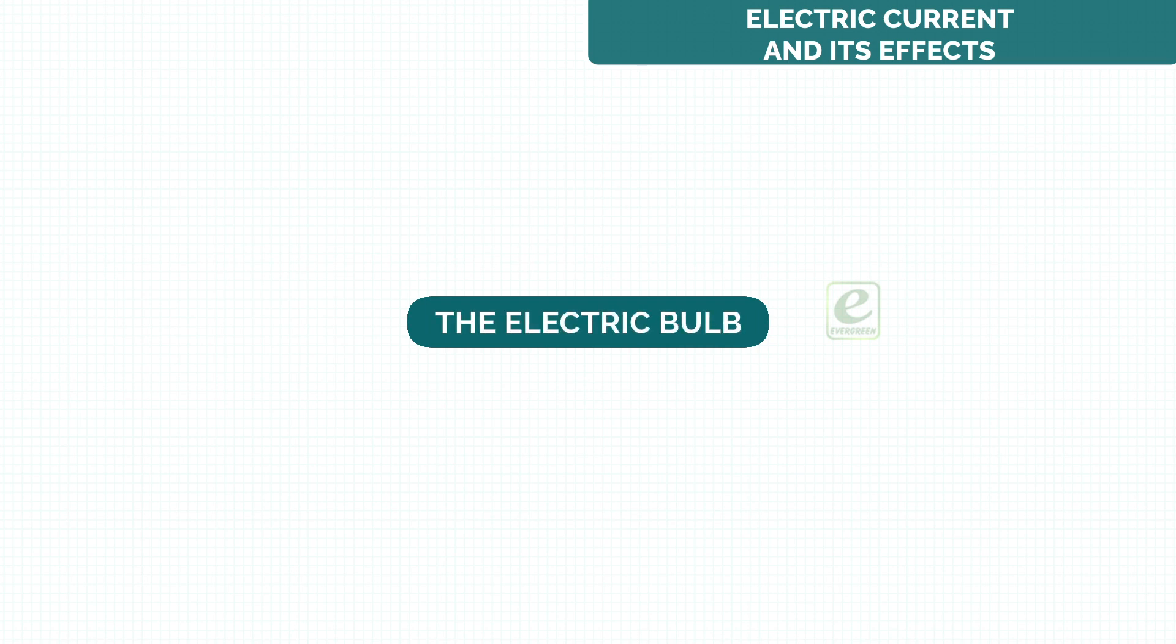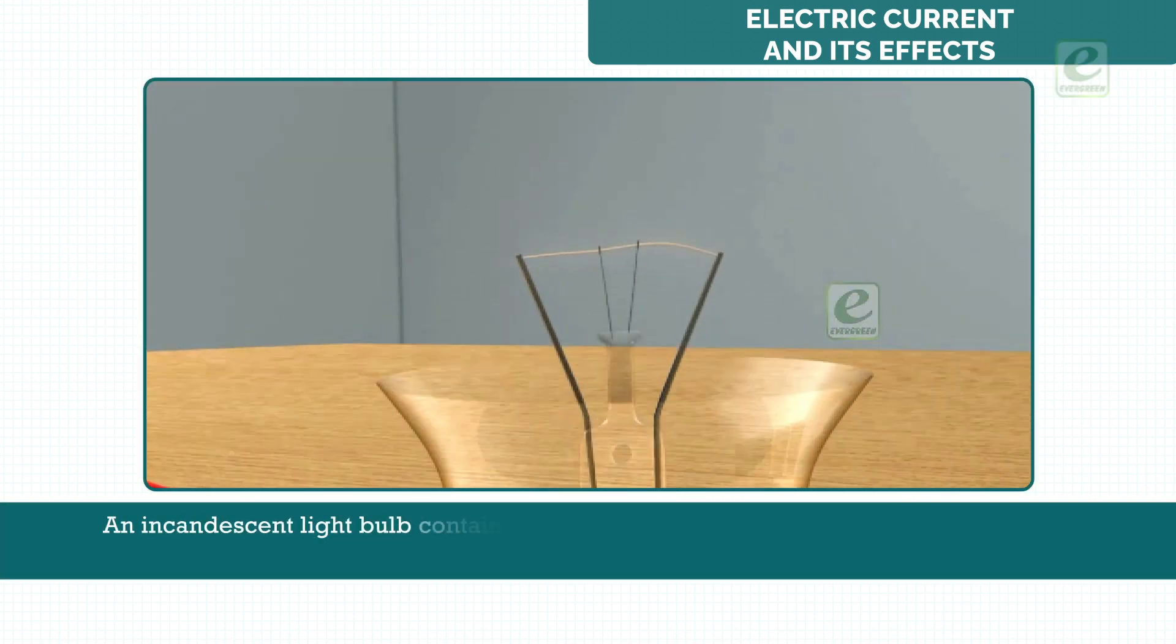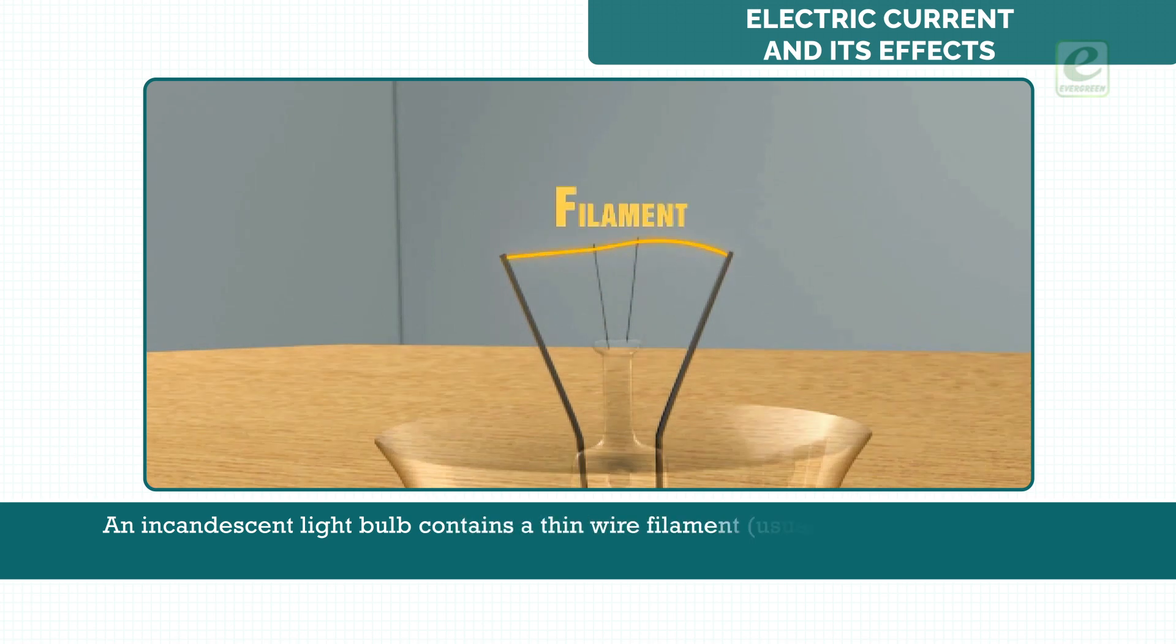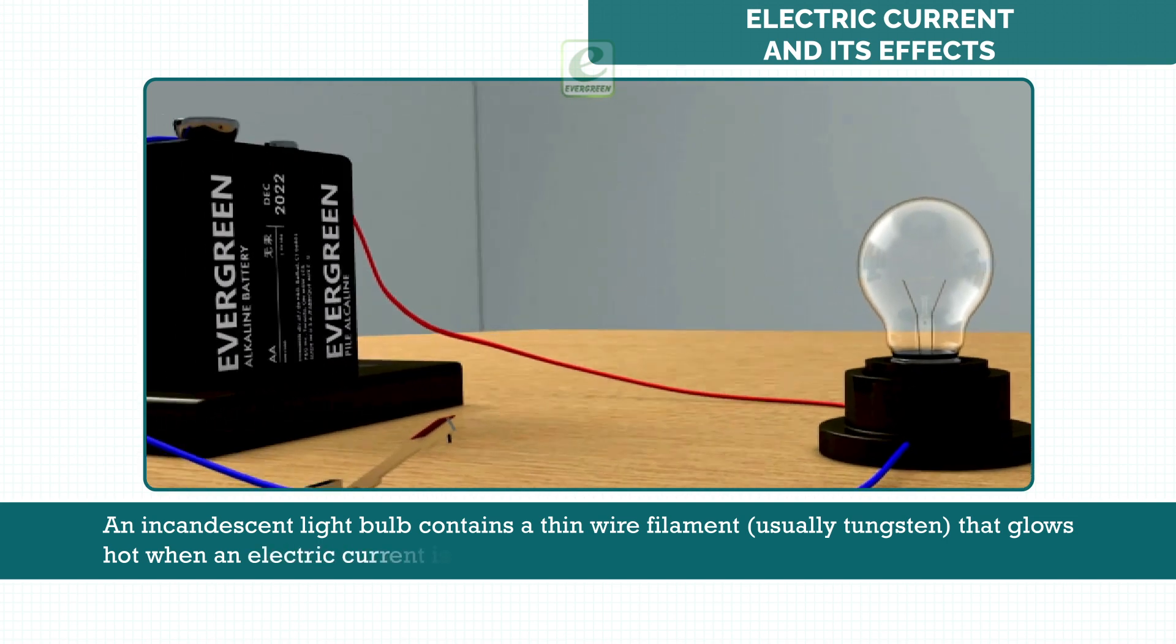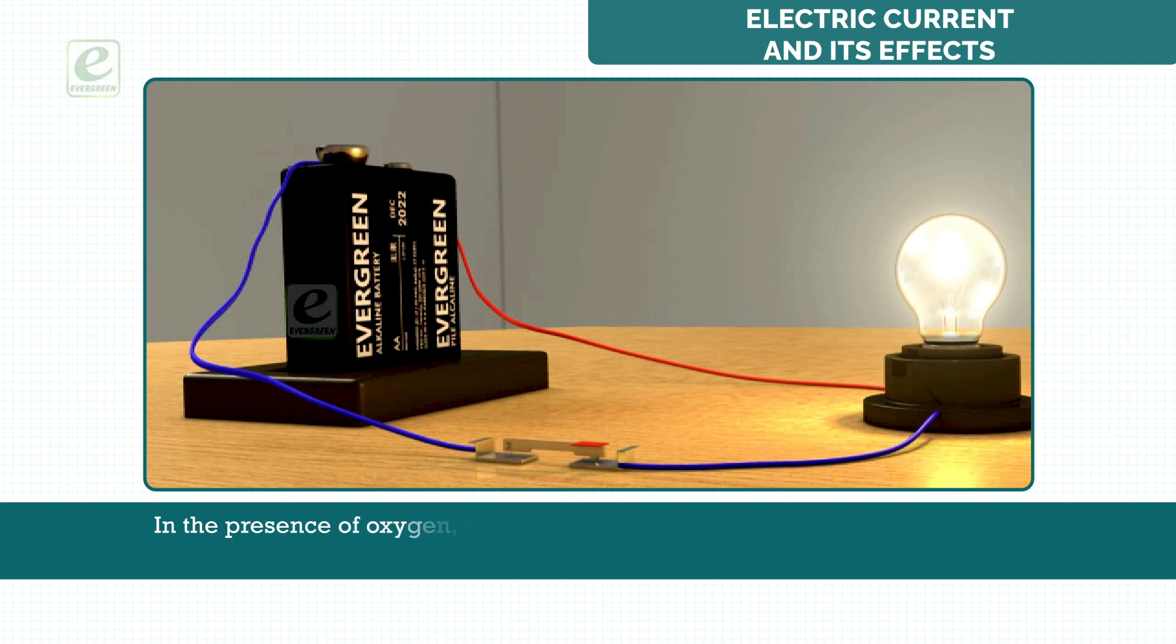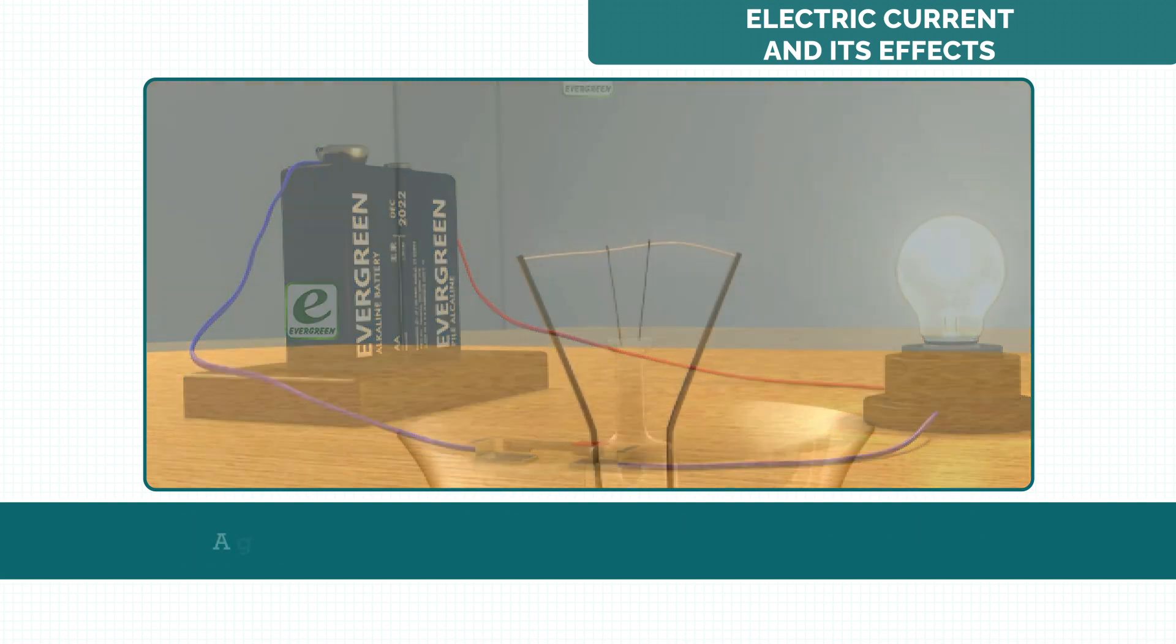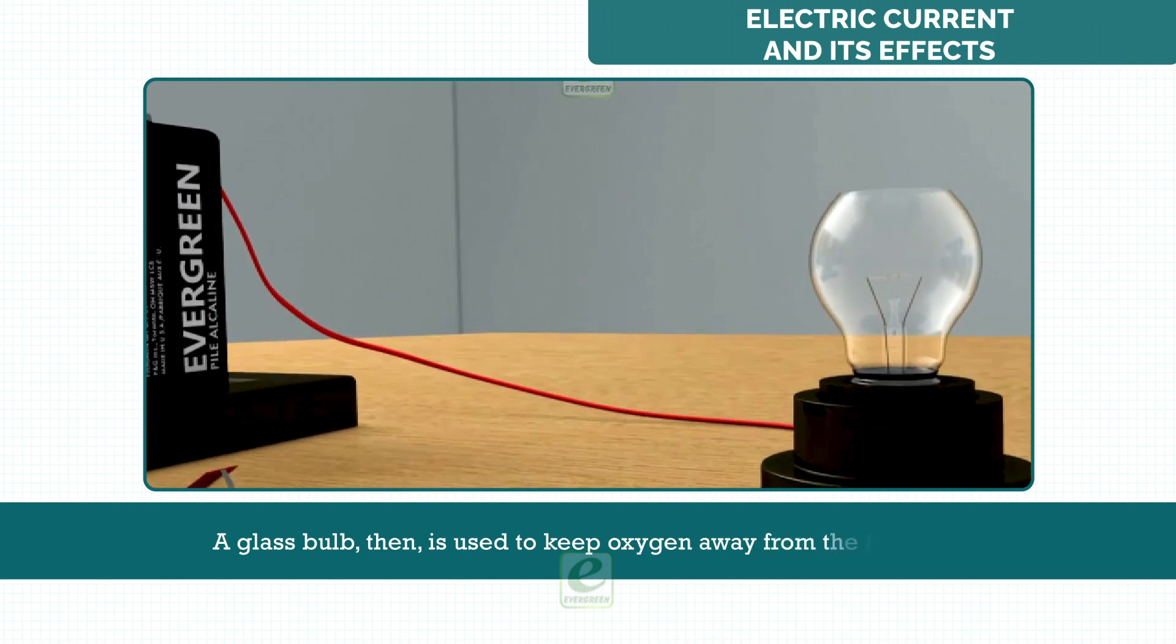The electric bulb. An incandescent light bulb contains a thin wire filament, usually tungsten, that glows hot when an electric current is passed through it. In the presence of oxygen, the filament would burn up as a result of the high temperature. A glass bulb then is used to keep oxygen away from the filament.